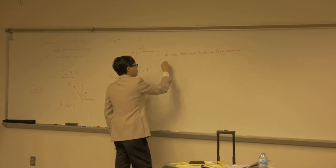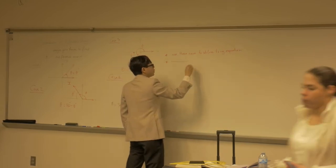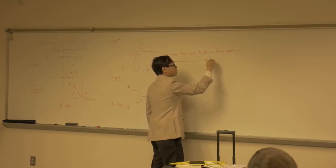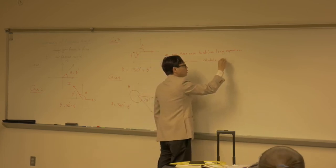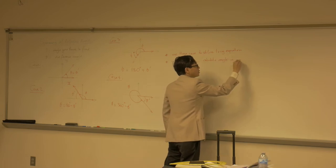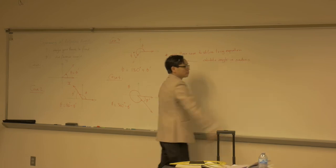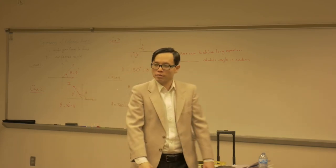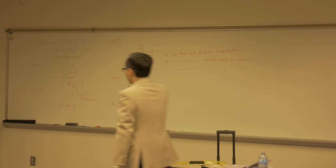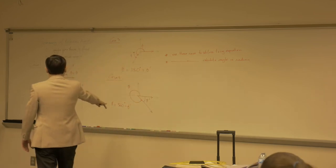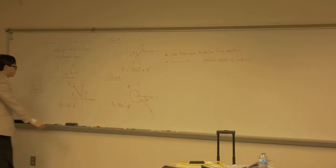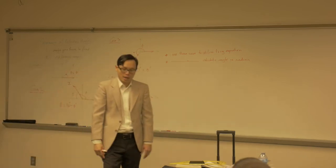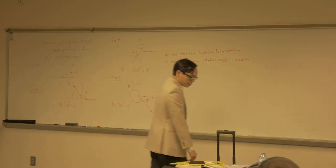Another thing we use this for is to calculate angles in radians. Instead of using 360 degrees, we use two pi, and instead of 180 degrees, we use pi — same meaning. I'll introduce the radian unit later.